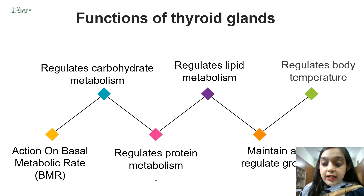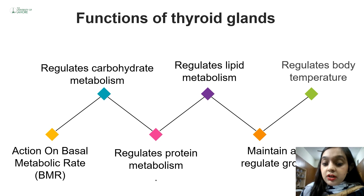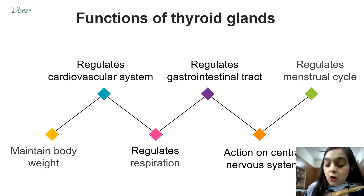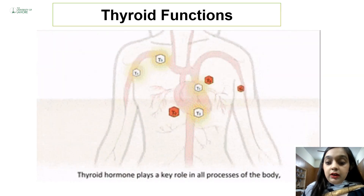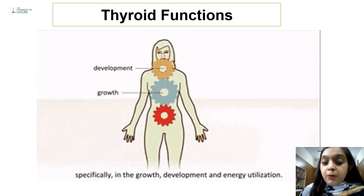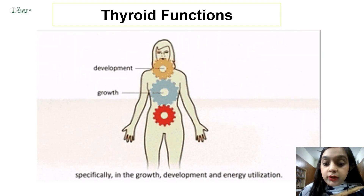Thyroid hormones play a role in almost every function in the body. Major roles include carbohydrate, protein, and lipid metabolism. They also play important roles in vital body measurements including temperature, growth, and basal metabolic rate. Thyroid hormones also regulate the gastrointestinal tract, menstrual cycle, respiration, body weight, and act on the central nervous system. From the blood, T3 and T4 reach every organ and cell, contributing to energy metabolism, growth, and development.